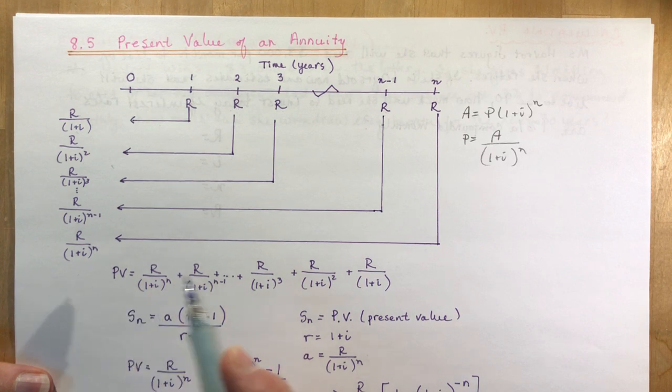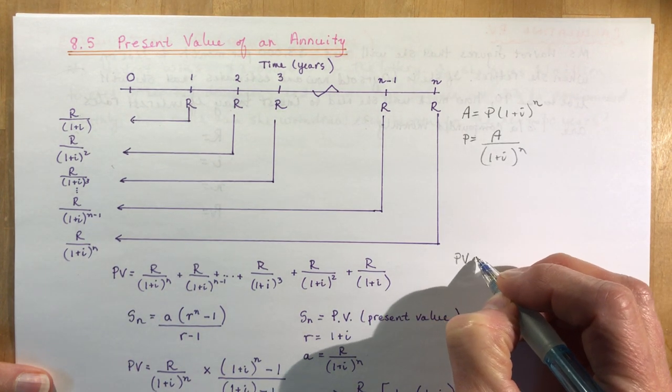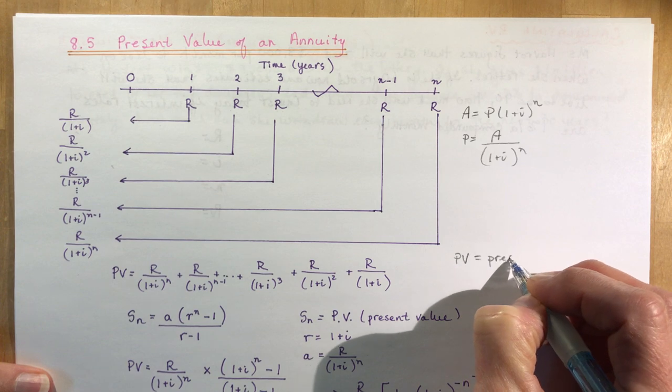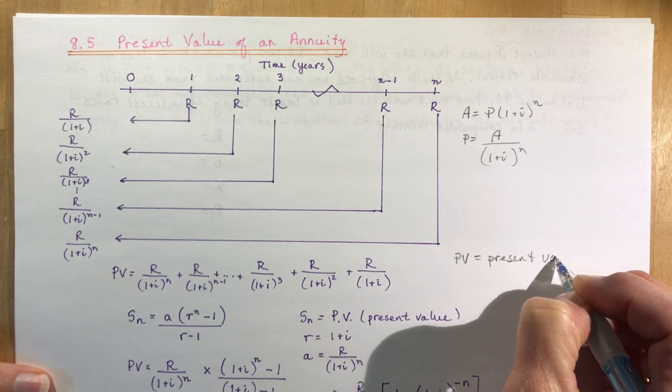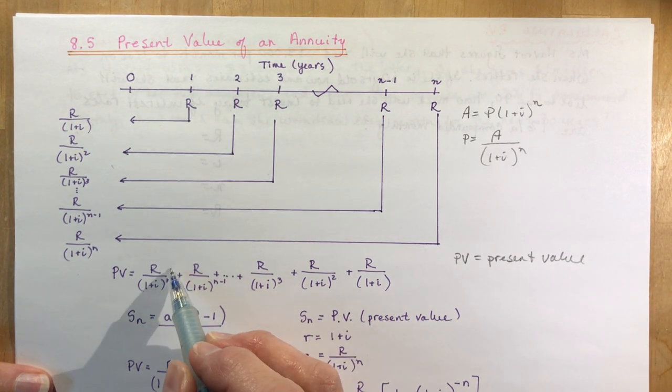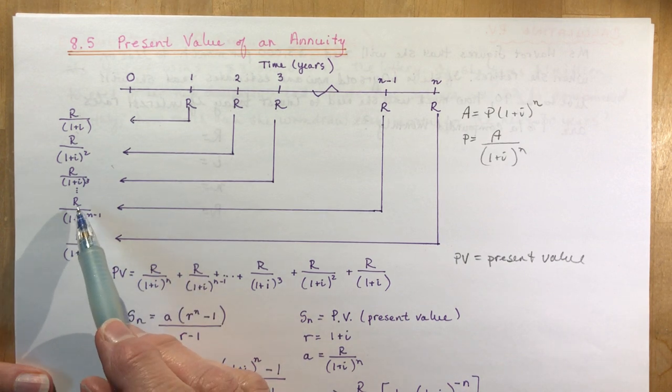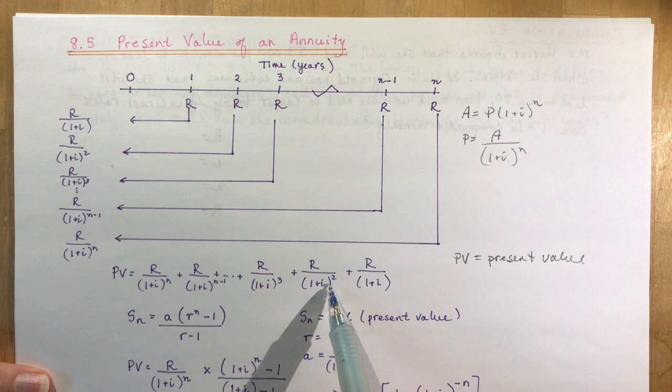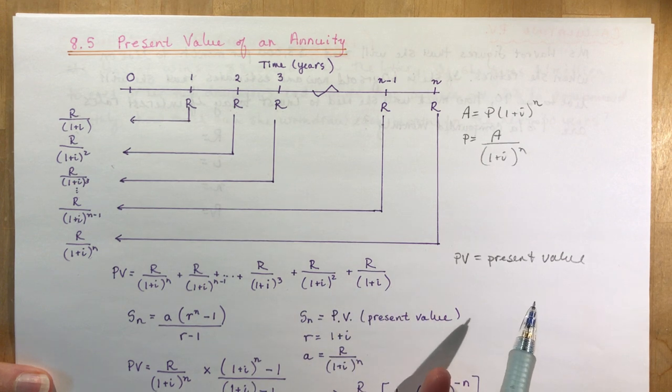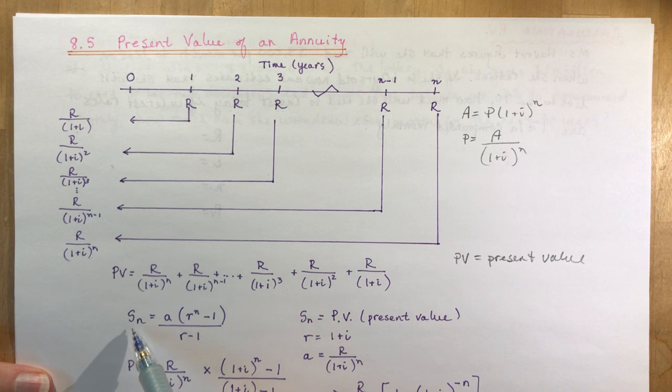It doesn't matter if I add 1 to 2 to 3 or 3 to 2 to 1, same equation. So here I'm saying PV, present value, is going to be R/(1+i)^n plus R/(1+i)^(n-1) dot dot dot plus 3 plus 2 plus 1. Nothing very exciting there, just writing it out.